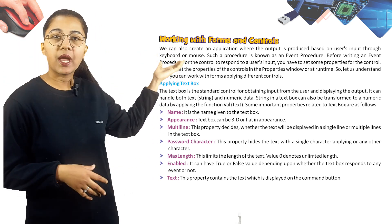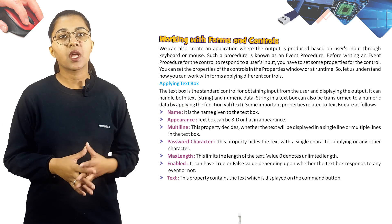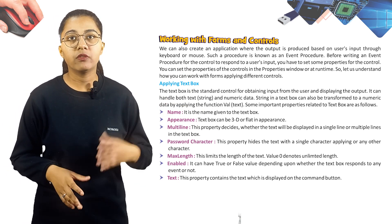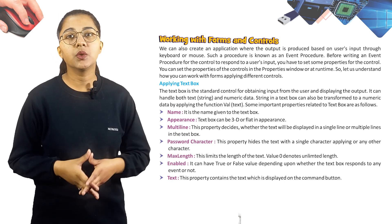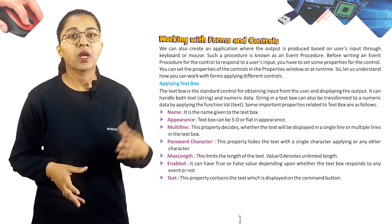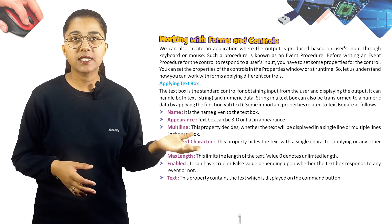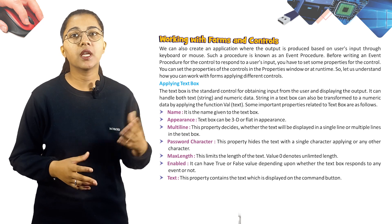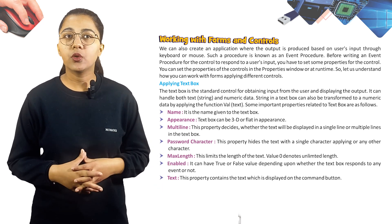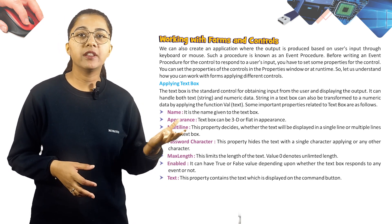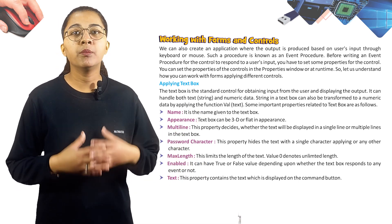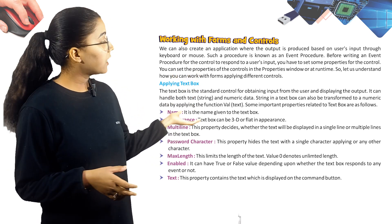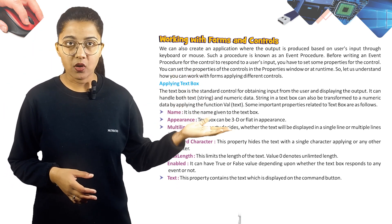The Text Box is the standard control for obtaining input from the user and displaying the output. It can handle both text, string, and numeric data. A string in a text box can also be transformed to numeric data by applying the Val() function. Some important properties of a text box are: Name — the name given to the text box.